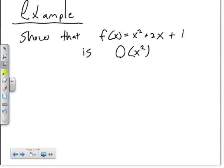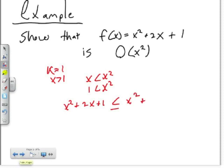We'll do an example. We need to show that the function f(x), which is x² + 2x + 1, is Big O of x². To start off, we can assume that K equals 1 because when x is bigger than 1, x < x² and also 1 < x². So we could rewrite the original function as x² + 2x + 1 < x² + 2x² + x².